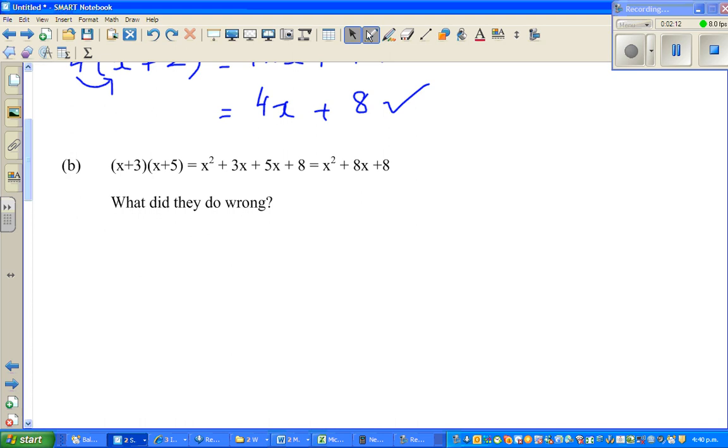So what the student has done is x plus 3 times x plus 5. So you've got x squared. I want you to think how he got x squared, then you've got 3x, then you've got 5x, and then you've got an 8. What's wrong there? What did the student do wrong?